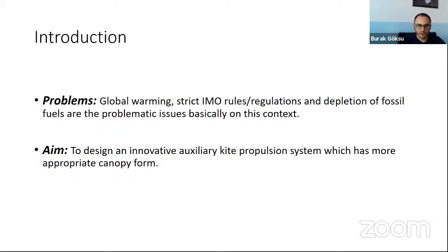Global warming, strict IMO rules and regulations, and depletion of fossil fuels are the most base problems on this issue. This study aims to design an auxiliary kite propulsion system with a more proper canopy form. In addition, while the carbon dioxide emission from the ships is above 3%, there is a struggle against air pollution control in maritime industry. In addition, the energy efficiency design index EEDI rules require that each new ship have an EEDI value that is less than the reference index line. Also, when studies on energy efficiency measures are examined, it's clear that meeting the post-2025 EEDI requirements will be nearly impossible without the addition of an external innovative energy source to the ship propulsion system.